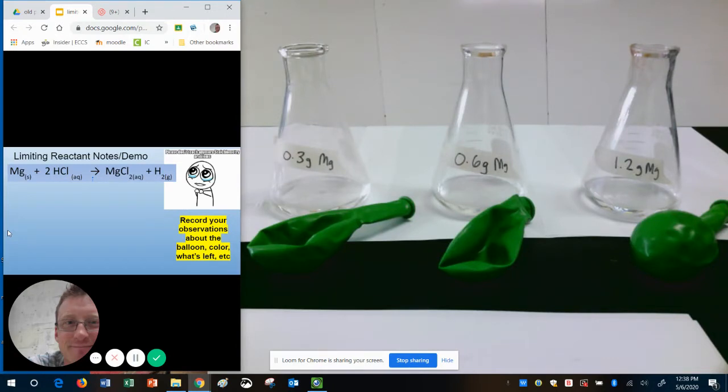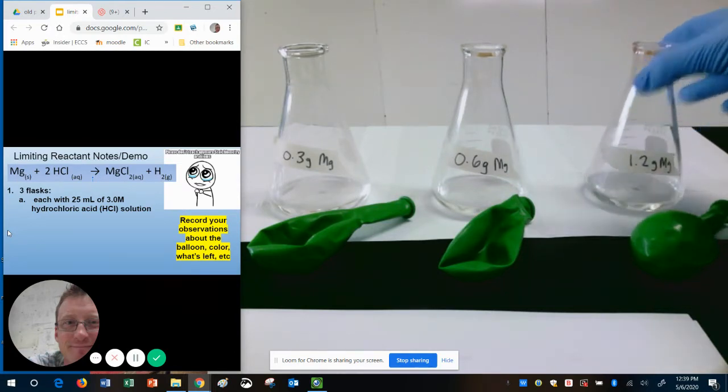So what we're going to do today is if you see my screen here, in each of these containers, each of these three flasks, I have 25 milliliters of liquid. So you can see there is a little bit of liquid in here. That liquid is the HCl, the hydrochloric gas.